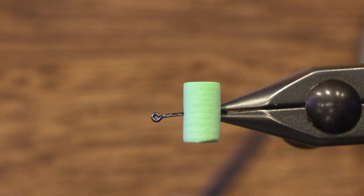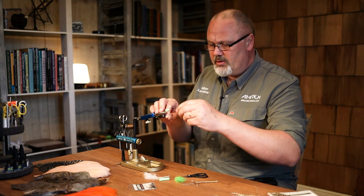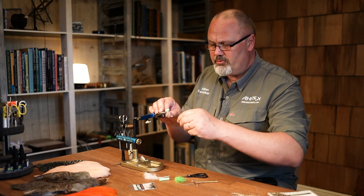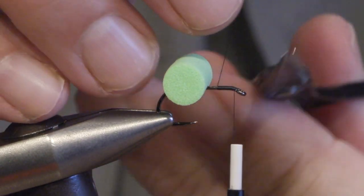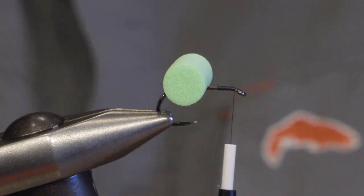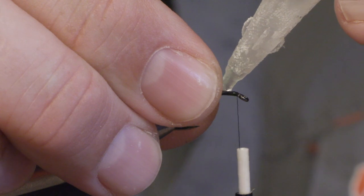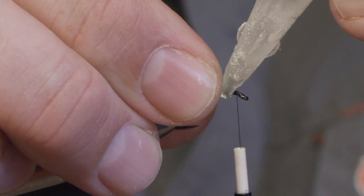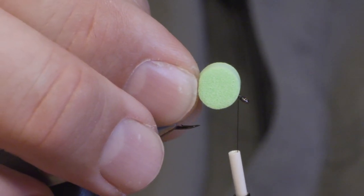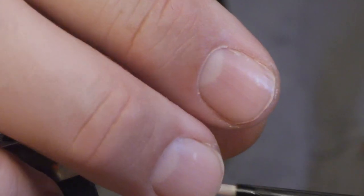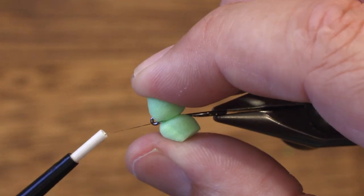I'm using a strong thread, this is a GSP thread. I cover the front of the shank with thread, and then we put some super glue to secure the foam even more. Then we push the foam over and tie it down using a figure of eight knot with the thread.